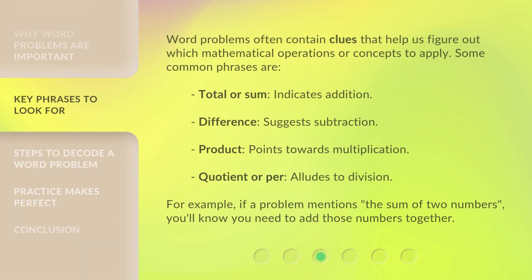Word problems often contain clues that help us figure out which mathematical operations or concepts to apply. Some common phrases: 'total' or 'sum' indicates addition, 'difference' suggests subtraction, 'product' points towards multiplication, and 'quotient' or 'per' alludes to division. For example, if a problem mentions 'the sum of two numbers,' you'll know you need to add those numbers together.